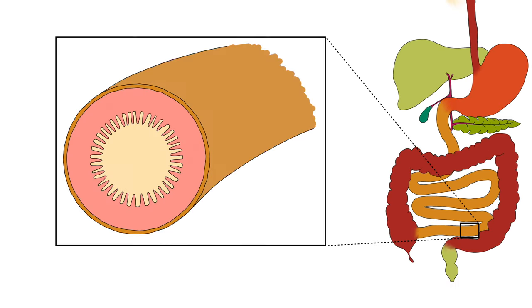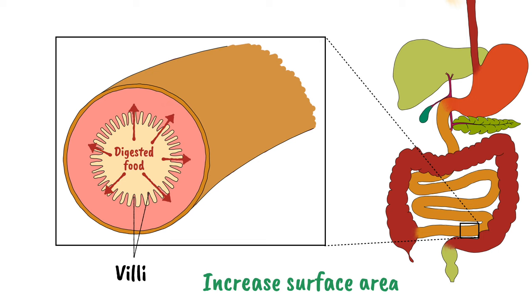The walls of the small intestine are lined with intestinal villi, and FYI it's one villus, many villi. The villi increase the surface area of the wall of the small intestine to maximize the rate of absorption of digested food.